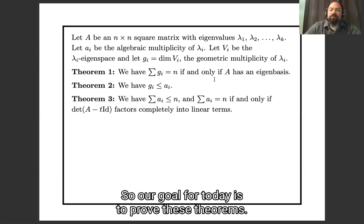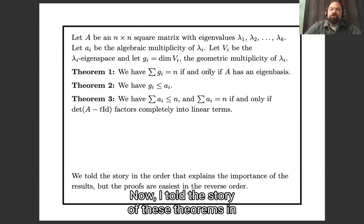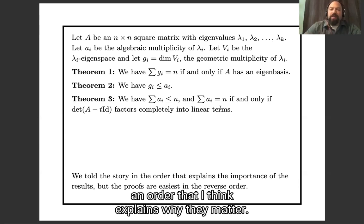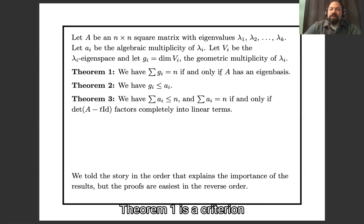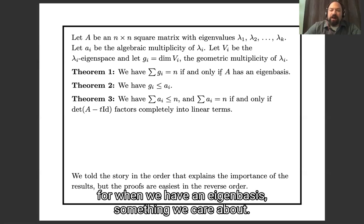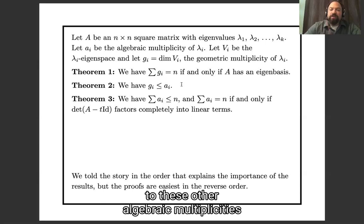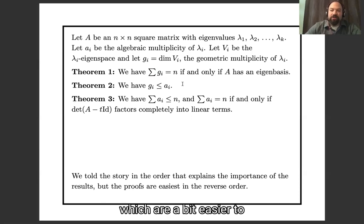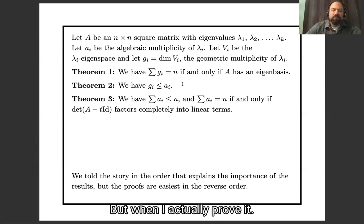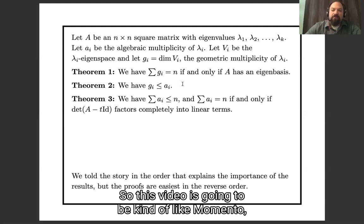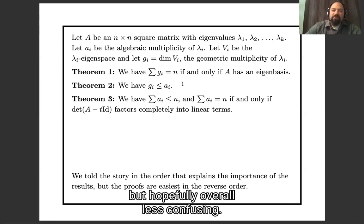Our goal for today is to prove these theorems. I told the story of these theorems in an order that explains why they matter — Theorem 1 is a criterion for when we have an eigenbasis, and Theorems 2 and 3 relate the sum g_i equals n criterion to the algebraic multiplicities, which are easier to compute. But when I actually prove them, I'm going to go in reverse order. So this video is going to be kind of like Memento, but hopefully a little less confusing.